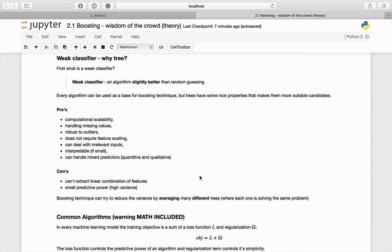We can use every algorithm as a base for boosting, but trees or more precisely decision trees have some nice properties that makes them perfect candidates. For example, they are really computationally scalable, they handle missing values, they are robust to outliers, they do not require feature scaling, can deal with irrelevant inputs. If small, they are also interpretable and can handle both quantitative and qualitative predictors.